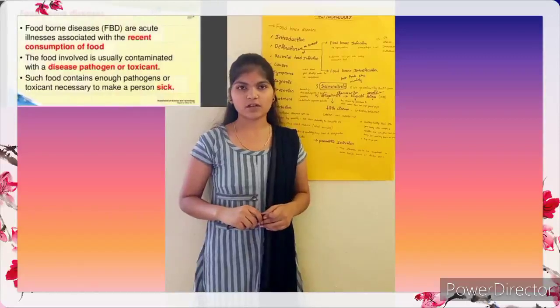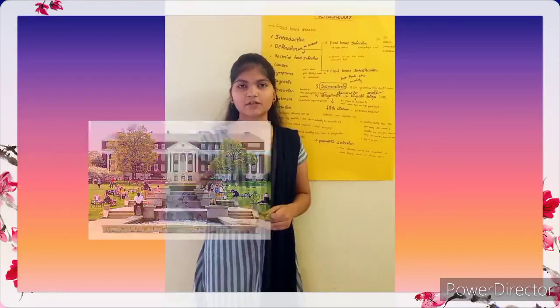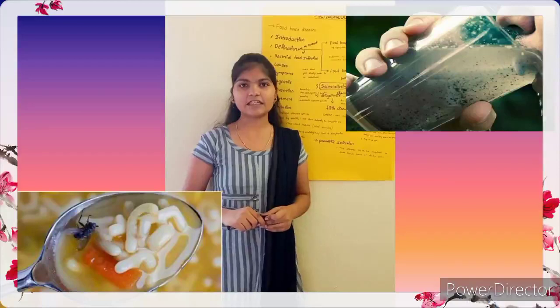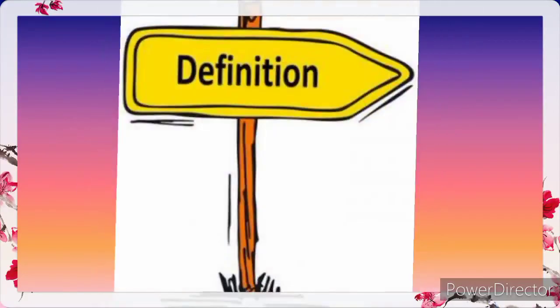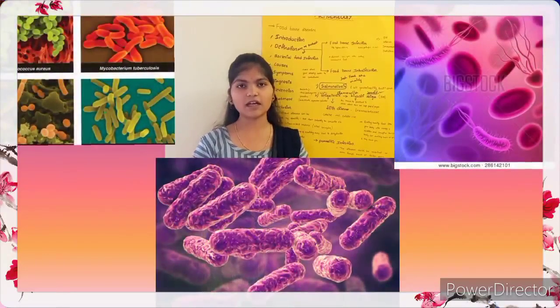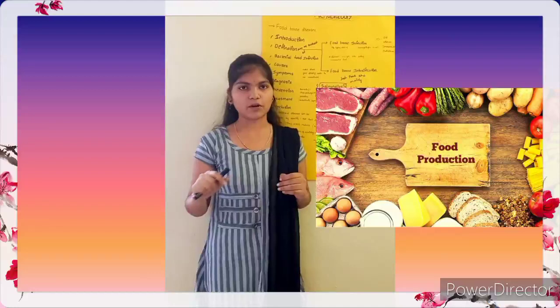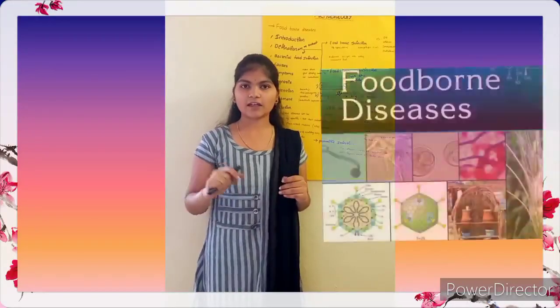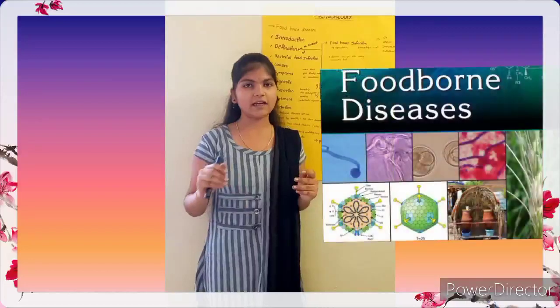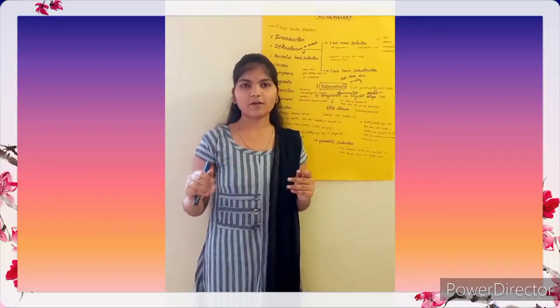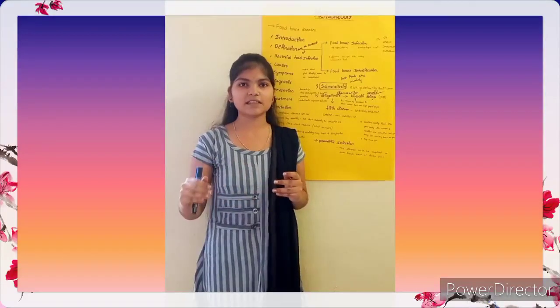The first known foodborne illness was proposed by doctors from the University of the mainland. Foodborne illness is the contamination of foods or beverages. Many different disease-causing microbes or pathogens can contaminate foods. Foodborne diseases result from infection with microorganisms or chemicals. The contaminated food may occur at any stage in the process from production to consumption. Foodborne diseases are also acute illnesses associated with recent consumption of food, involving a disease pathogen and toxicant necessary to make a person sick.